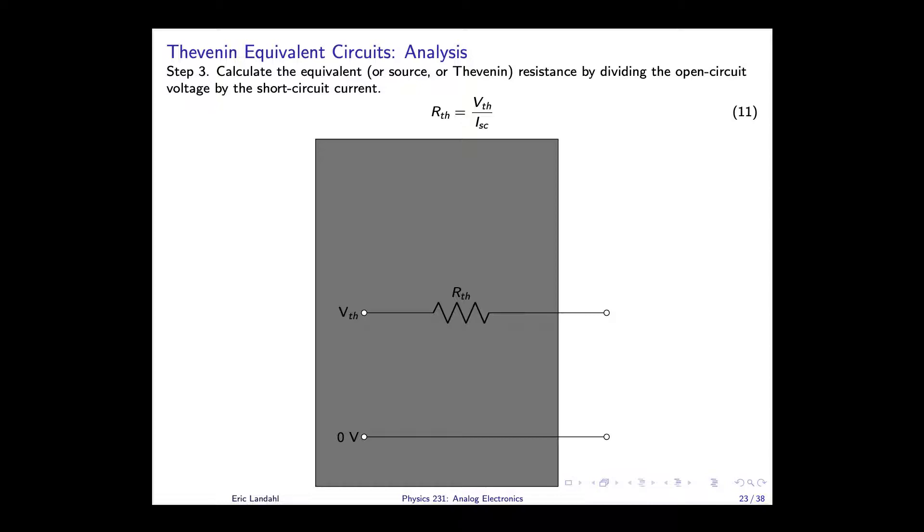And then the next step, step three, and pretty much the final step in terms of determining the Thevenin equivalent, is to determine what this Rth is. And it turns out you get Rth just by dividing the open circuit voltage by the short circuit current, which results from the last two measurements. So it's pretty simple. In principle, you measure the open circuit voltage with your voltmeter, then you measure the short circuit current through the ammeter from the output to the terminal. You divide those two numbers. A volt over an ampere gives you an ohm, and that's Rth, the internal equivalent resistance.